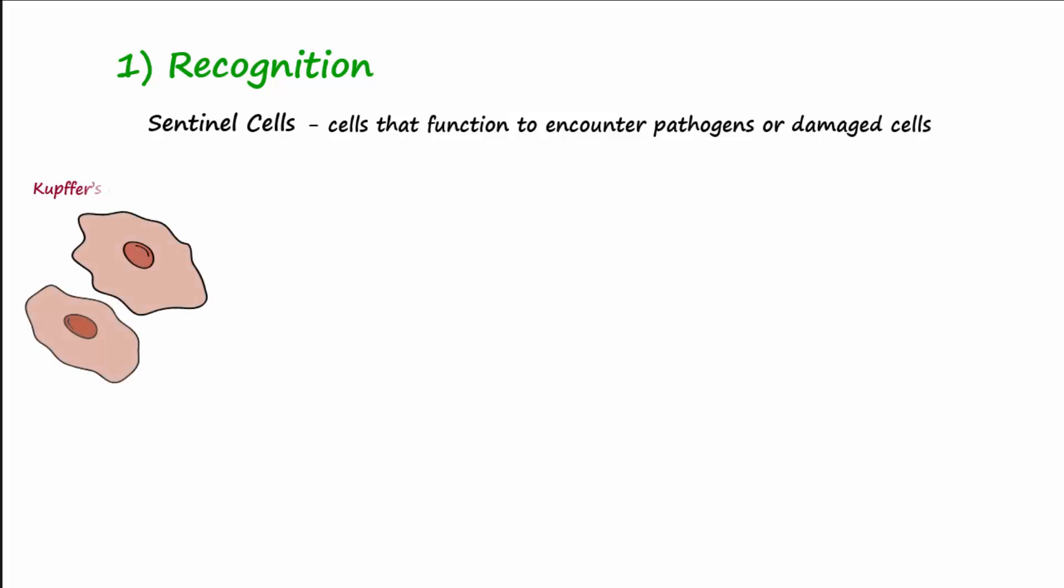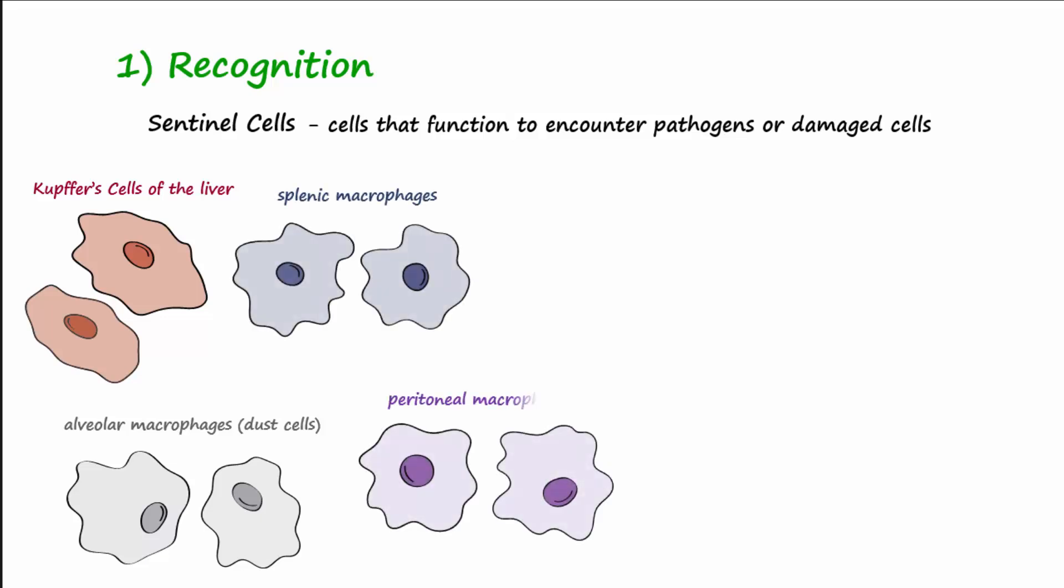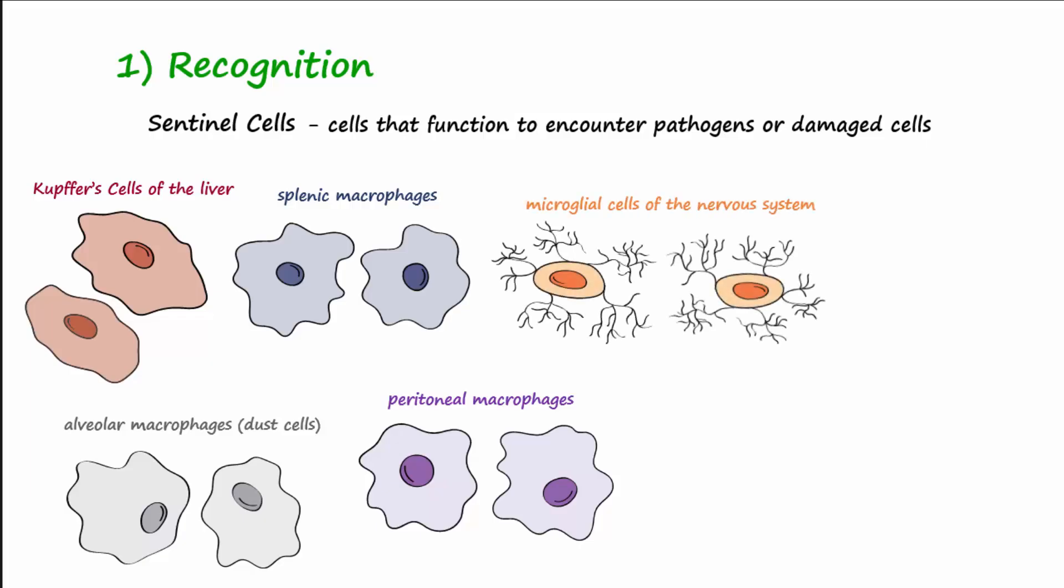The first step recognition involves sentinel cells. Sentinel cells are found in many body tissues and function to encounter pathogens or damaged cells. These cells include Kupffer cells of the liver, alveolar macrophages or dust cells of the lungs, splenic macrophages, peritoneal macrophages, microglial cells of the nervous system, Langerhans cells in epithelial tissues, and mast cells found near blood vessels.